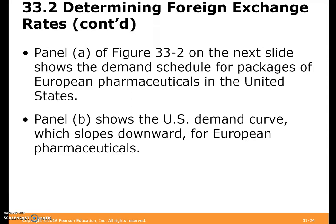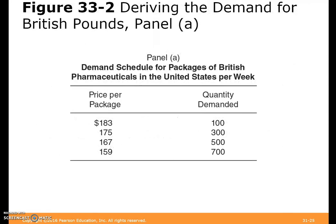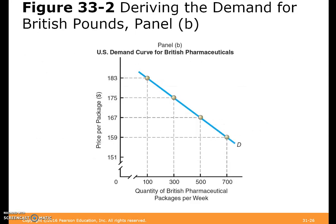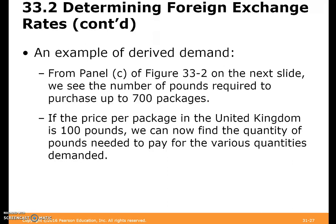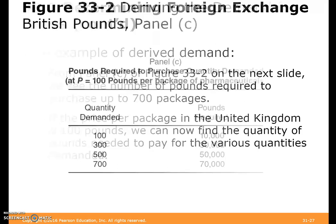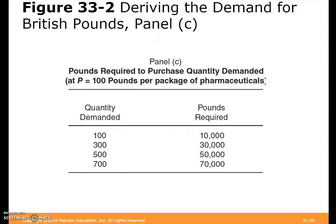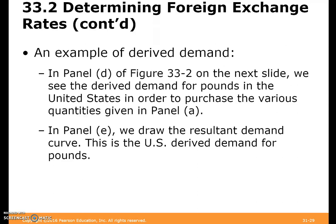Here we'll see a demand schedule for packages of European pharmaceuticals in the United States. Panel B shows the U.S. demand curve, which slopes downward for European pharmaceuticals. We're also looking at the number of pounds of British currency required to purchase 700 packages. If the price per package in the United Kingdom is 100 pounds, we can find the quantity of pounds needed to pay for the various quantities demanded.